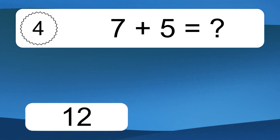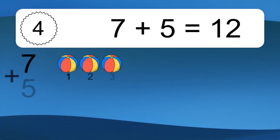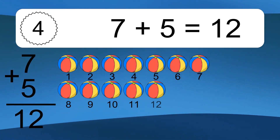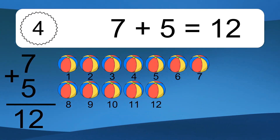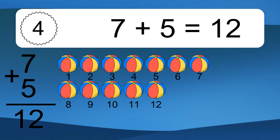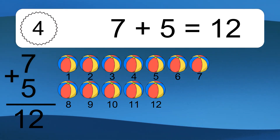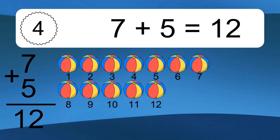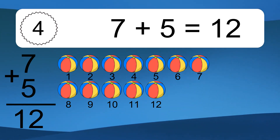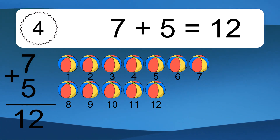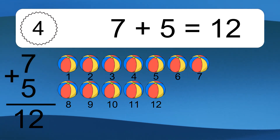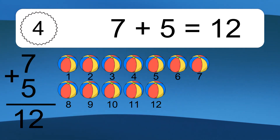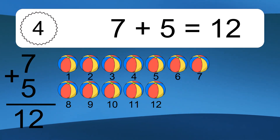7 plus 5 equals what? 7 plus 5 equals 12. Let's count it. 1, 2, 3, 4, 5, 6, 7, 8, 9, 10, 11, 12.